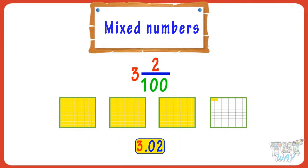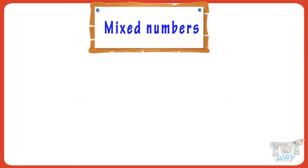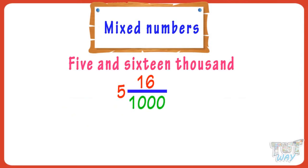Let's take another example. It is 5 and 16 thousandths. Let's write it in decimals. 16 thousandths is written as 0.016, so we will write this fraction in decimal as 5.016.